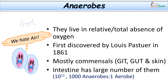Let us consider the characteristics of anaerobes. Anaerobes are bacteria which can survive and exist without the presence of oxygen. Some of them are in fact killed when exposed to as little as 0.03 percent oxygen. This differentiates obligate anaerobes from facultative anaerobes — facultative anaerobes can grow in the presence of a little oxygen and are not killed. These bacteria were first discovered by Louis Pasteur in 1861.